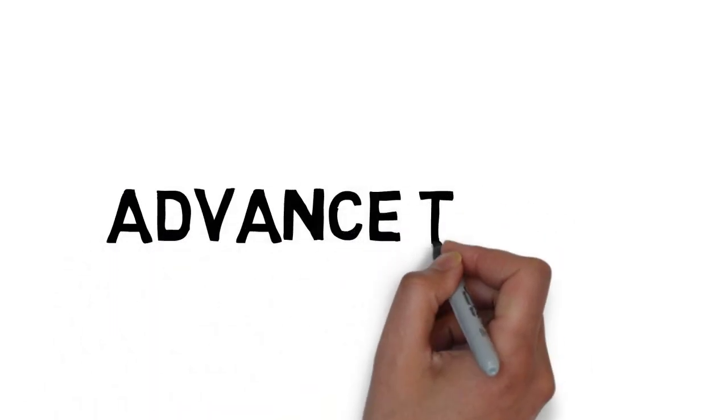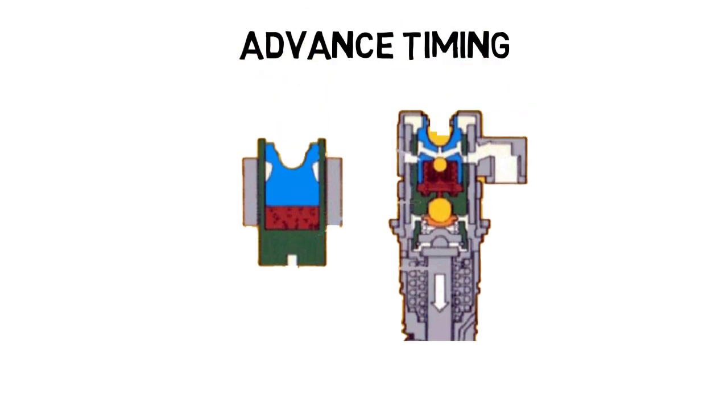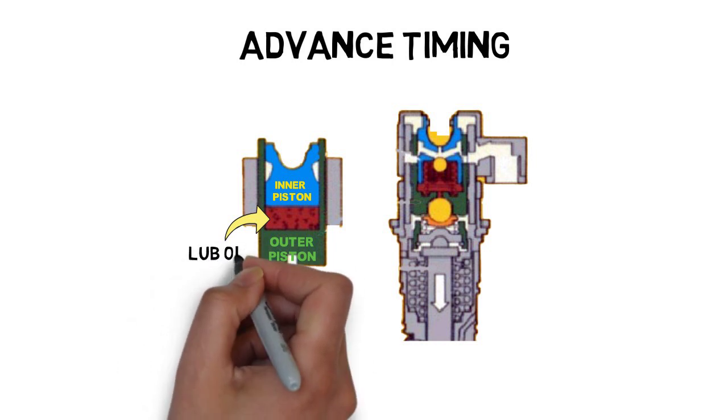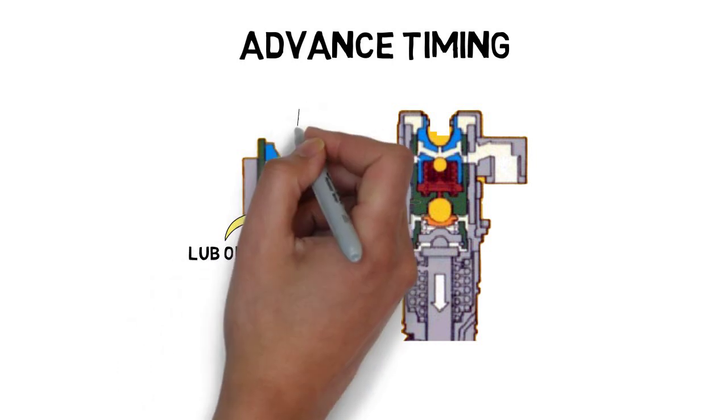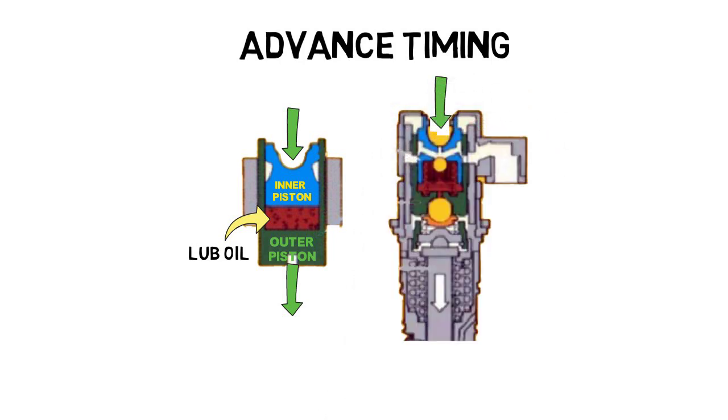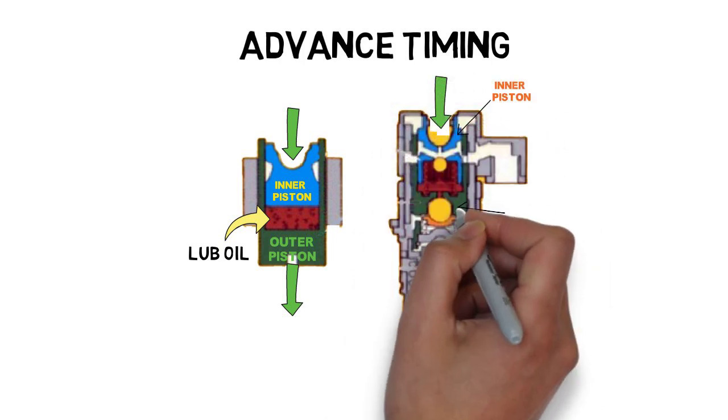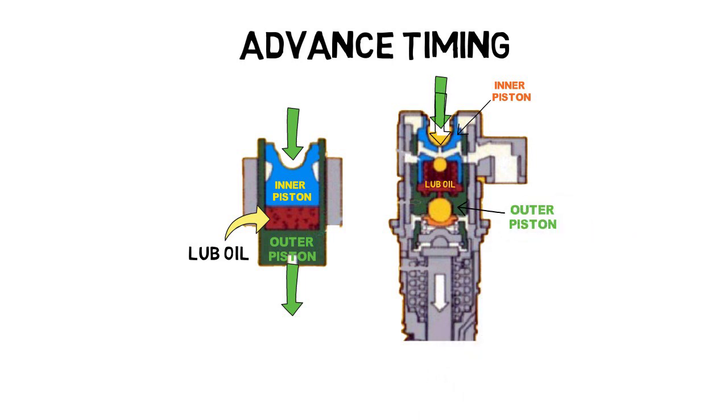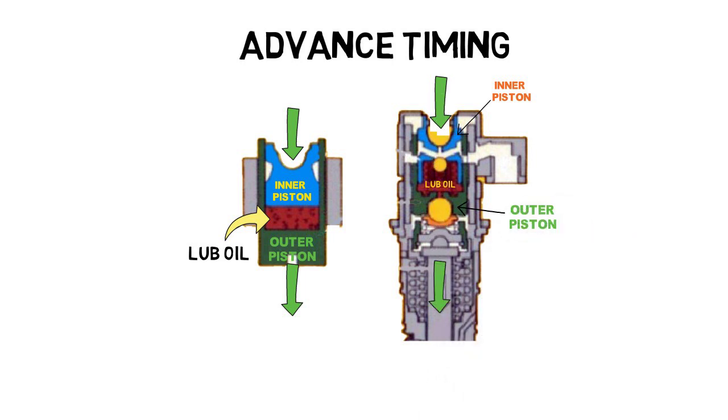Now let's fill the tappet with oil in advanced timing. The injector is metering fuel. As the cam follower starts up the cam injection ramp, the injector lever begins to force the inner piston downward. Since the oil between the pistons forms a solid link, the downward pressure is immediately transmitted to the outer piston, and the injector plunger begins its downward travel.